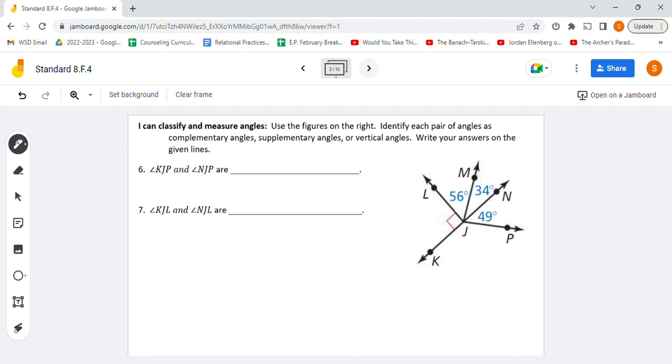On this next question, we have to be able to identify and classify some angles. Our choices are complementary, supplementary, and vertical angles. And then this notation here helps us identify the angles. So angle KJP, that would go from K to J to P. That would be this angle right here. And NJP would go N to J to P. Those two angles, as we can see right here, form a straight line. That means that those are supplementary angles.